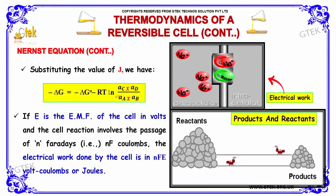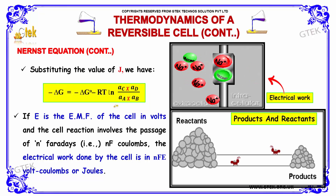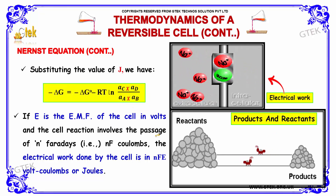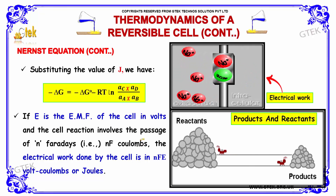Substituting the value of J, we have ΔG equal to the expression where J equals the activity of C multiplied by the activity of D, divided by the activity of A multiplied by the activity of B. If E is the EMF of the cell in volts and the cell reaction involves the passage of N Faradays — that is NF coulombs — then the electrical work done by the cell is NEF joules.